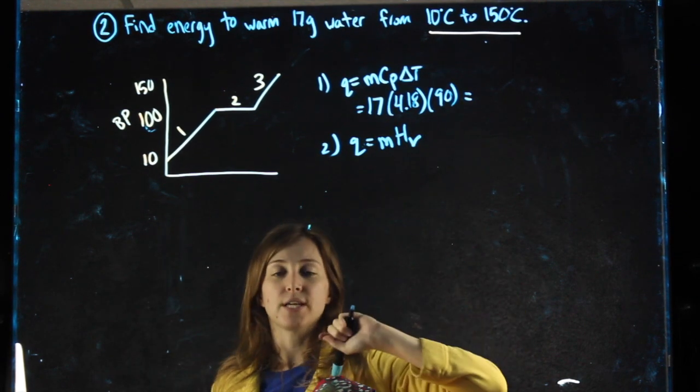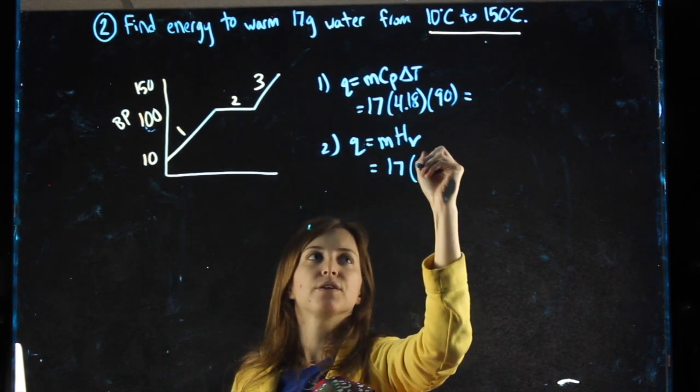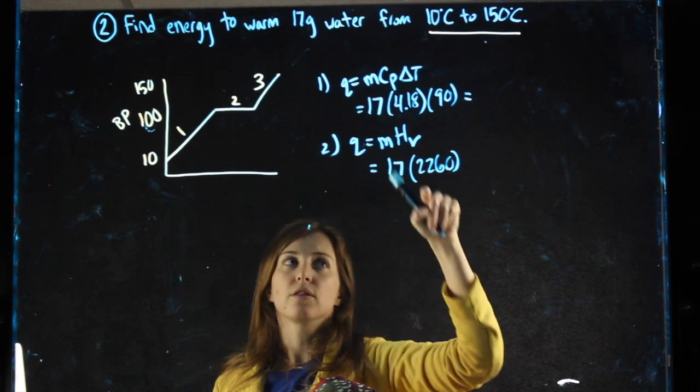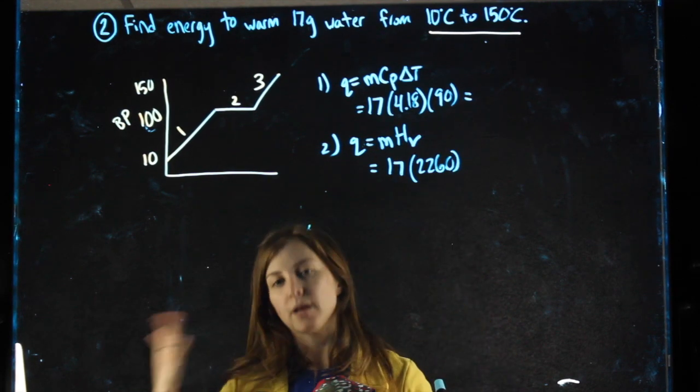If we're at the melting point, we'd use HF. Mass of water is still 17. HV for water is 2260. You can pull the constants off of the chart that's given on the review and on the test.